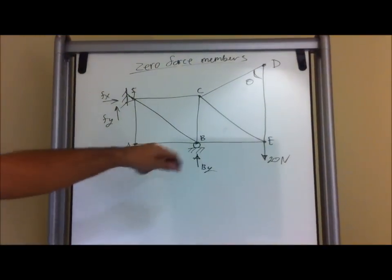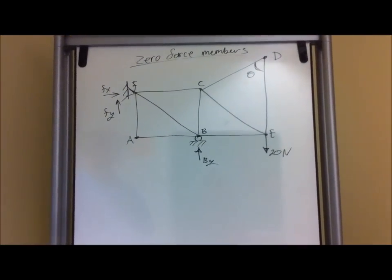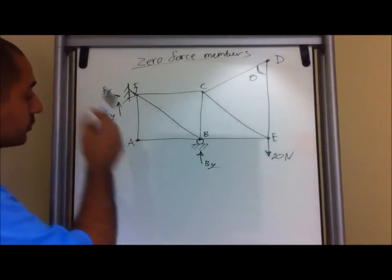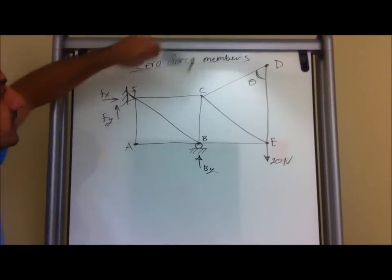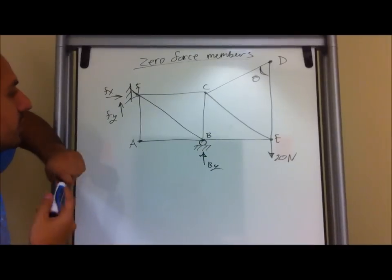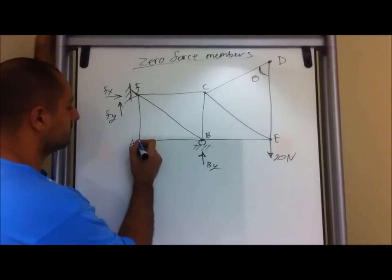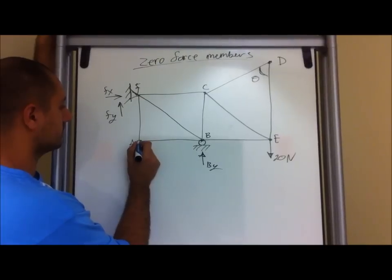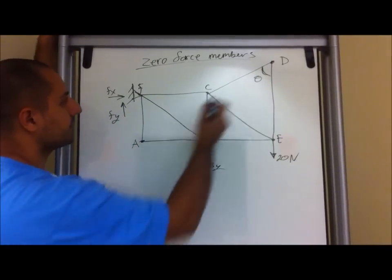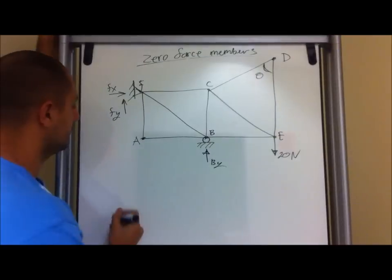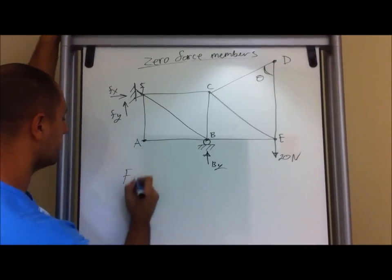The whole goal of this is just to determine the zero force members. The best way to do that, you have to draw the free body diagram of each of the joints. But the best shortcut is, before you do that, make sure you do the free body diagram of each joint at the farthest joints. For example, you have A and D — they are the farthest. So let's do the free body diagram at A.